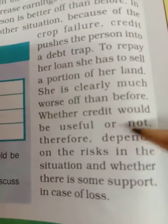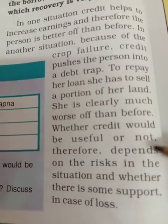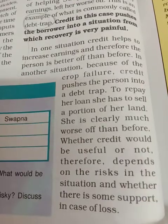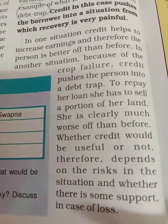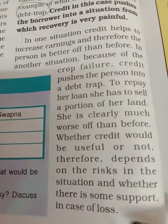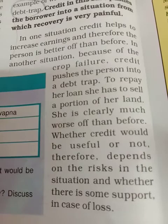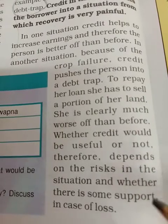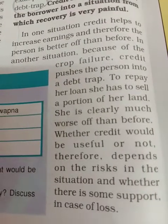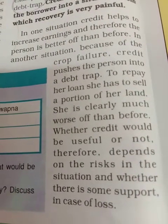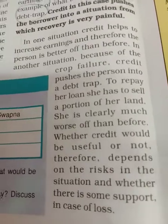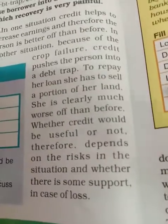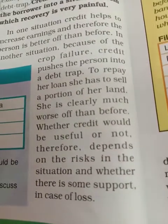Whether credit would be useful or not depends on the risk in the situation and whether there is some support in case of loss. Swapna was in need of support from some government authority in this case. That is why this has been pointed out, because it happens with many farmers.